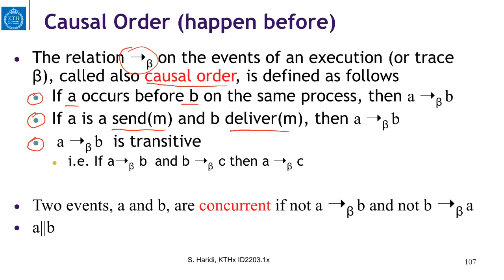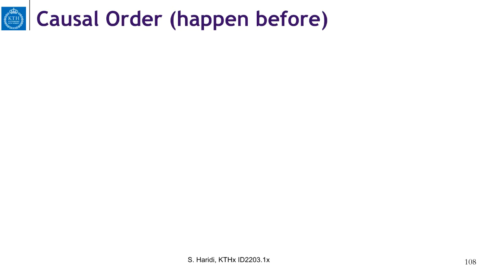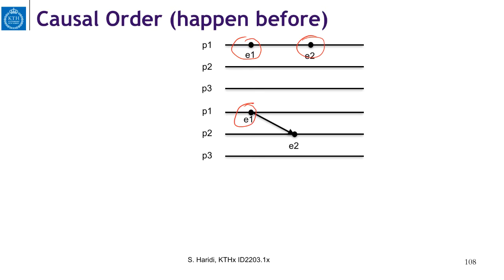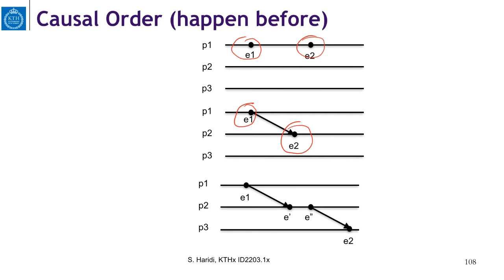Now, two events A and B are said to be concurrent if it is not the case that A happens before B, nor B happens before A. Here is the happens-before relation illustrated: event E1 is before event E2 on the same process; event E1 is a send event and event E2 is a delivery of that message; and the relation is transitive, with intervening events that are causally related between these two.